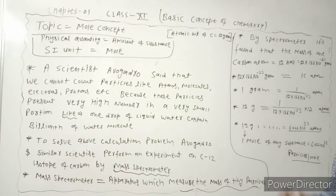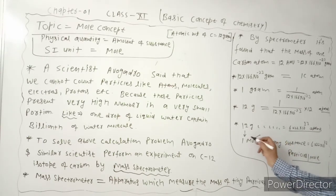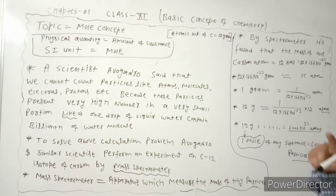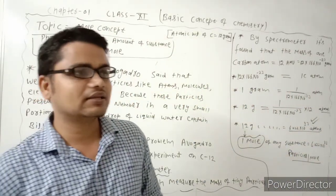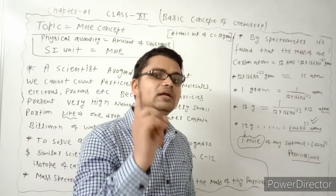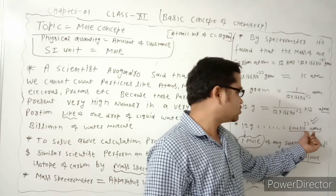So if we have 12 grams of carbon and we divide it by the mass of one carbon atom, the number we get is 6.022 × 10²³. We say that one mole of carbon contains exactly this many carbon atoms. This is the mole concept — one mole of any substance contains 6.022 × 10²³ particles.